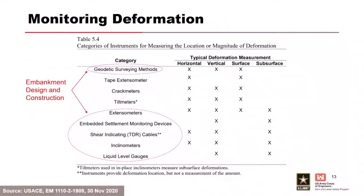This table from EM 1110-2-1908 shows categories of instruments for measuring location or magnitude of deformation. The ones circled in red are relevant to embankment dams — uncircled ones are primarily for concrete structures. The table indicates the type of deformation monitored: horizontal, vertical, surface, or subsurface. Survey monuments are the most familiar surface instruments; others are subsurface.